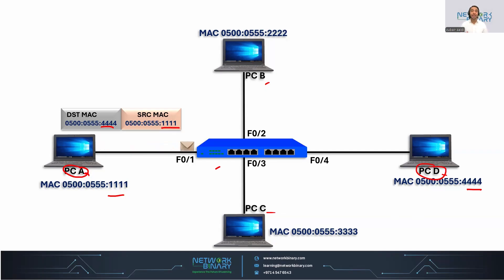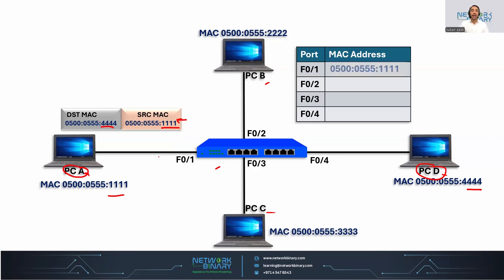Now what happens when the switch receives the frame? Whenever the switch receives the frame, it de-encapsulates the layer 2 header and looks at what is the source MAC address. It found the source MAC address, and now it is going to add that MAC address inside its CAM table or MAC address table on the interface, which is 0/1 on your screen.